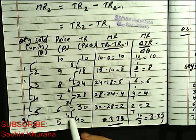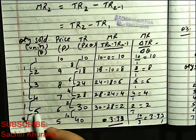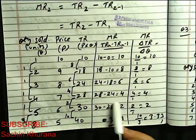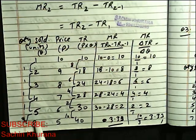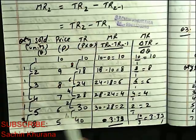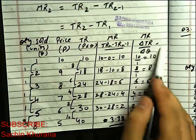Now what happened? The change here is 10, and the change here is 3. So 10 divided by 3 is 3.33. So when we have non-consecutive order of production or sales or revenue, then we cannot calculate MR from this formula, we have to use this formula.